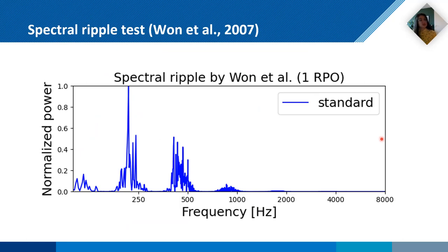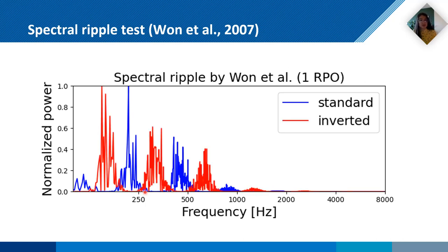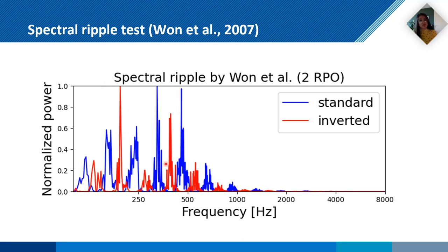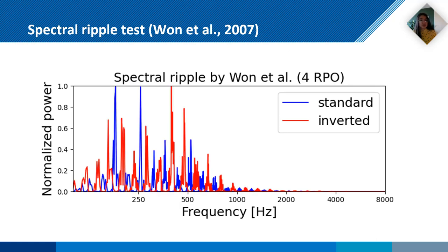The first test, the spectral ripple test by WAN, consists of stimuli with ripples in their frequency domain, and then the listener has to distinguish between the standard ripple and the inverted ripple. The amount of peaks — the ripples per octave — is the ripple density. With increasing ripples, the test becomes more difficult as the distance between the peaks becomes less.